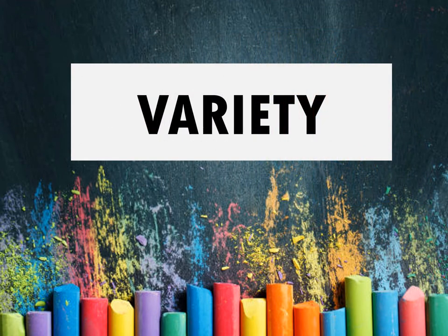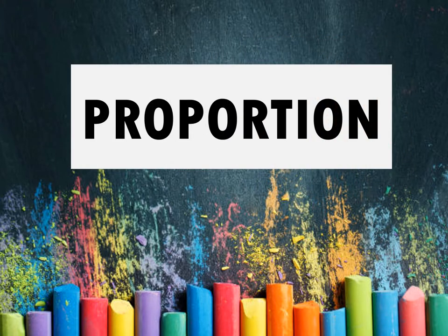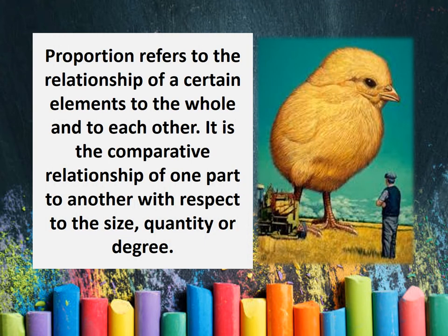The next is variety. Variety is a principle of design concerned with diversity or contrast. Variety is achieved by using different shapes, lines, colors, and other elements of art. The next principle of art is proportion. Proportion refers to the relationship of a certain element to the whole and to each other. It is the comparative relationship of one part to another with respect to size, quantity, or degree.